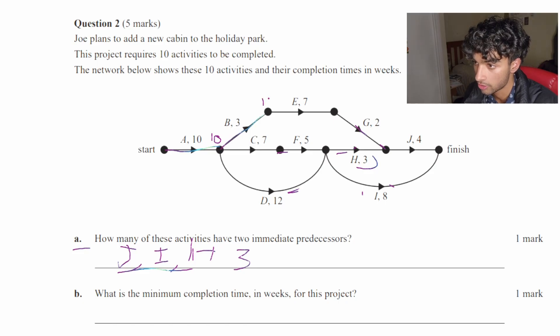So 10 plus 3 is 13. 13 plus 7 is 20. 20 plus 2 is 22. 22 plus 4 is 26. I'm pretty sure there's a longer one right here. 10 plus 7 is 17. 7 plus 5, 22. 25, 29. So if we go here.